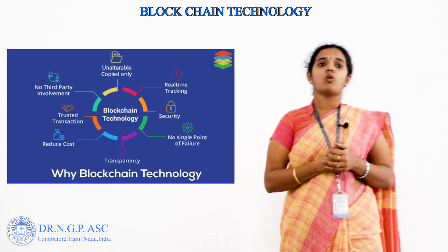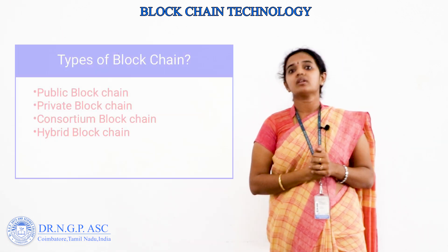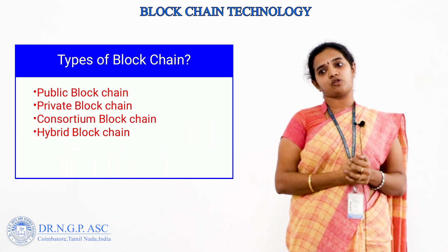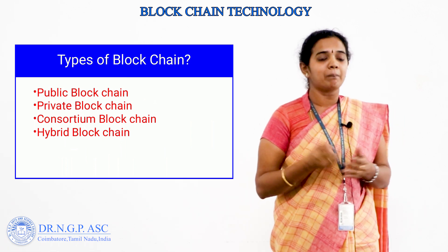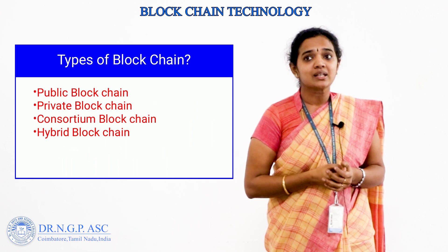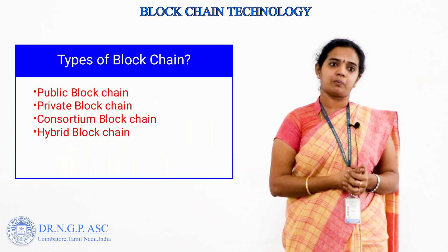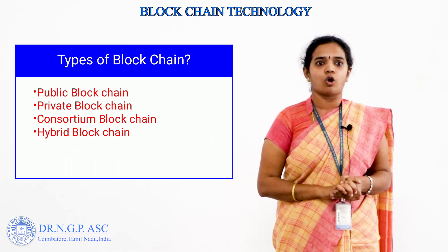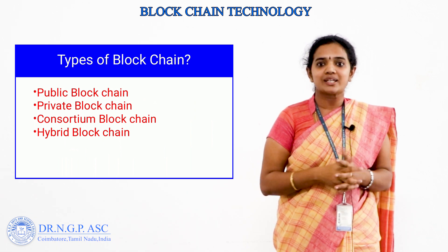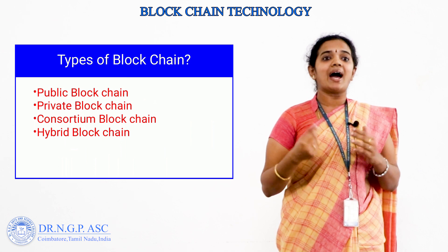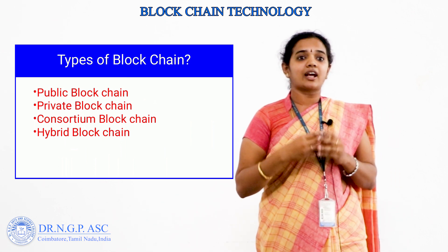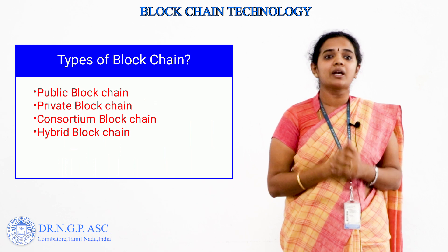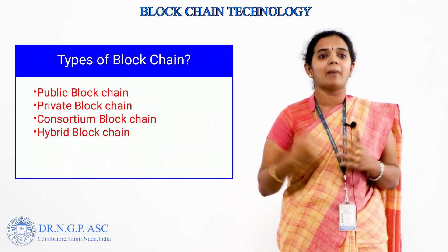Now we can move on to the types of blockchain. Blockchain can be categorized into four types: public, private, consortium, and hybrid. A public blockchain is authorized to access current records, perform proof of work on incoming blocks, and also do mining work.